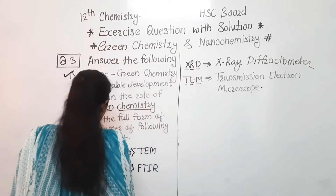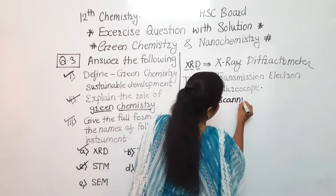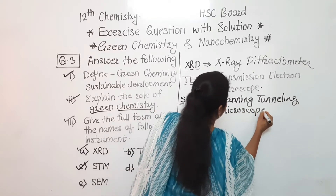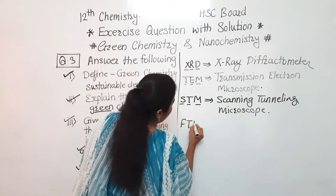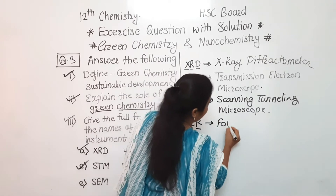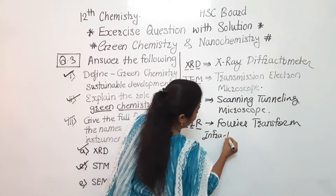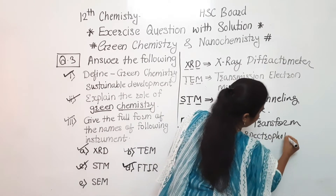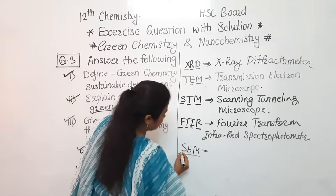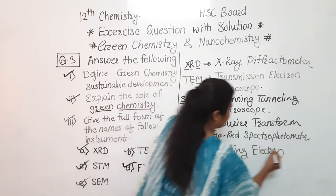Third, STM stands for Scanning Tunneling Microscope. Fourth, FTIR: F stands for Fourier, T for Transform, I for Infrared, making it Fourier Transform Infrared Spectrophotometer. Fifth, SEM: S stands for Scanning, E for Electron, and M for Microscope — Scanning Electron Microscope. With this, we have completed question number three's instrument full forms section.